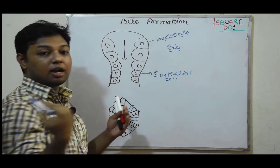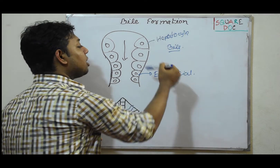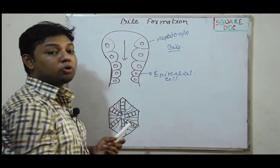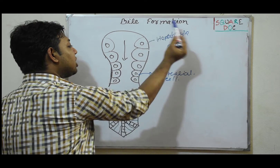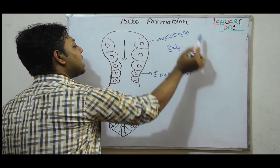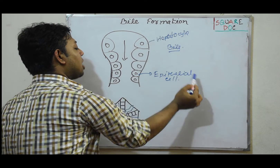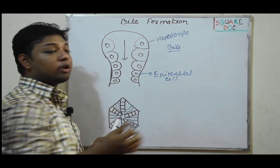Bile is a digestive juice. It is continuously produced in the liver by hepatocytes.